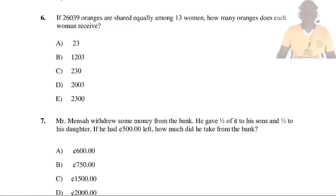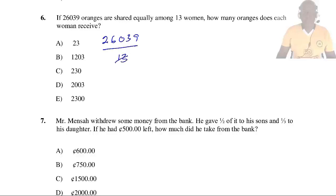Question 6: If 26,039 oranges are shared equally among 13 women, how many oranges does each woman receive? We divide 26,039 by 13 and get 2,003. So the answer is D.